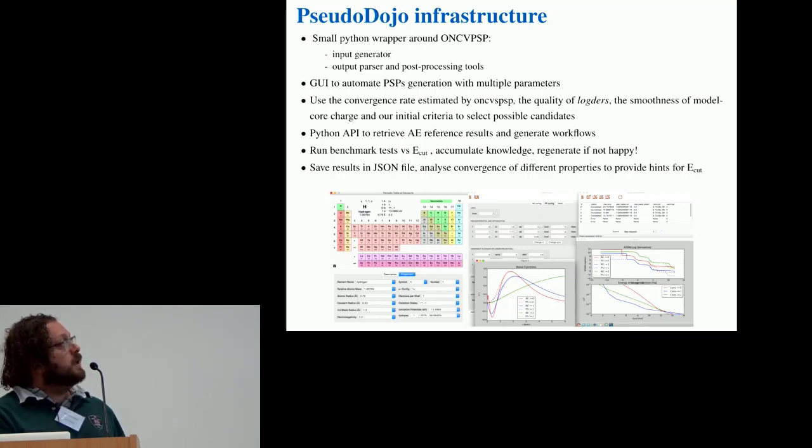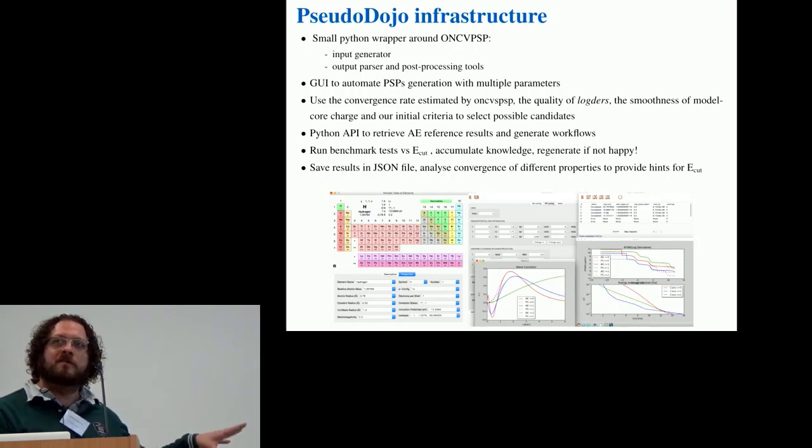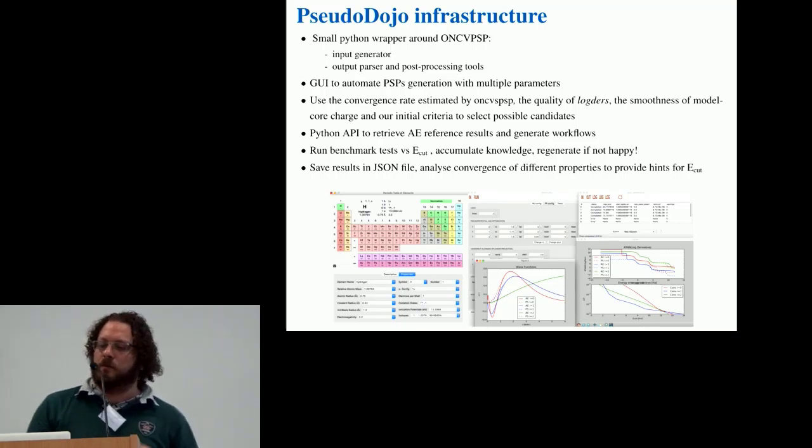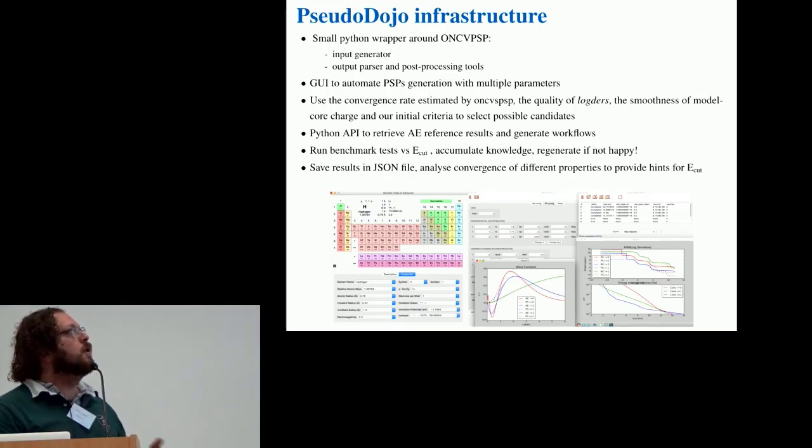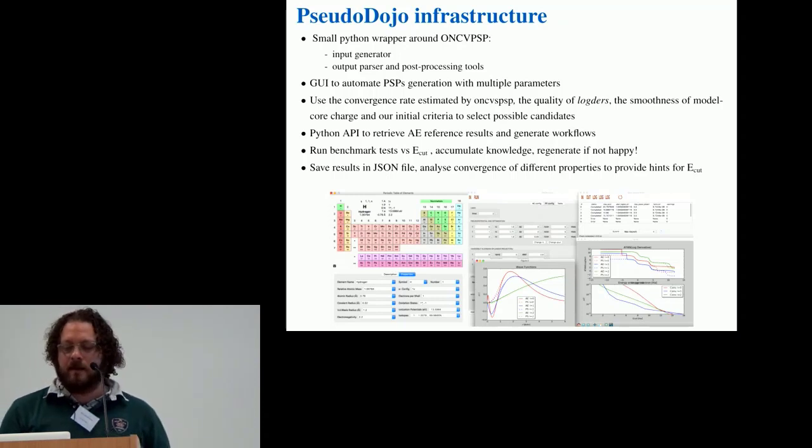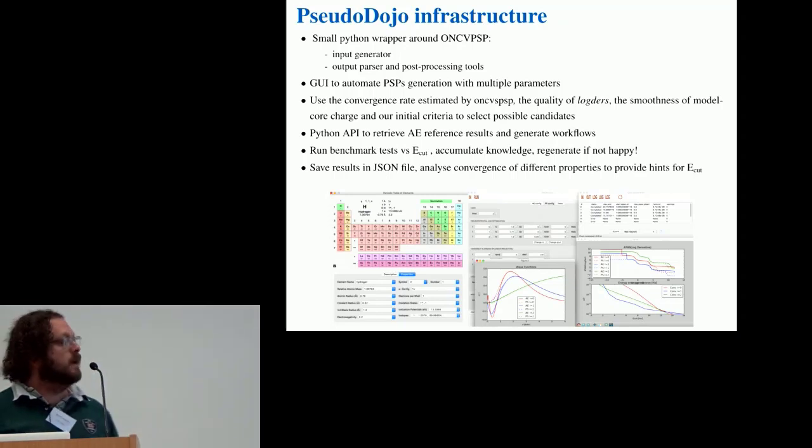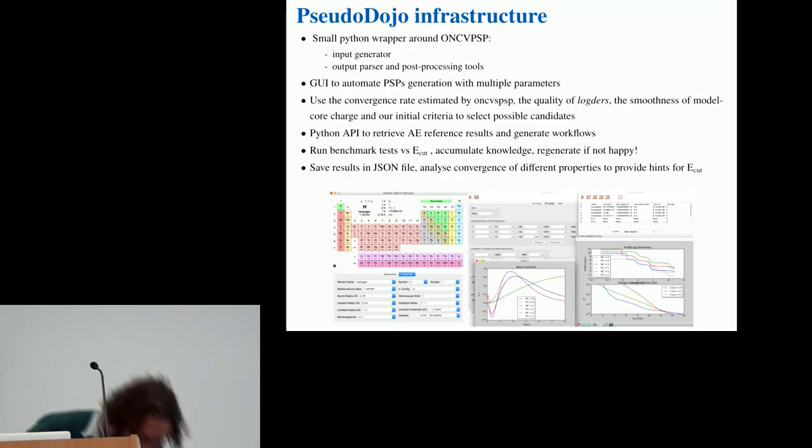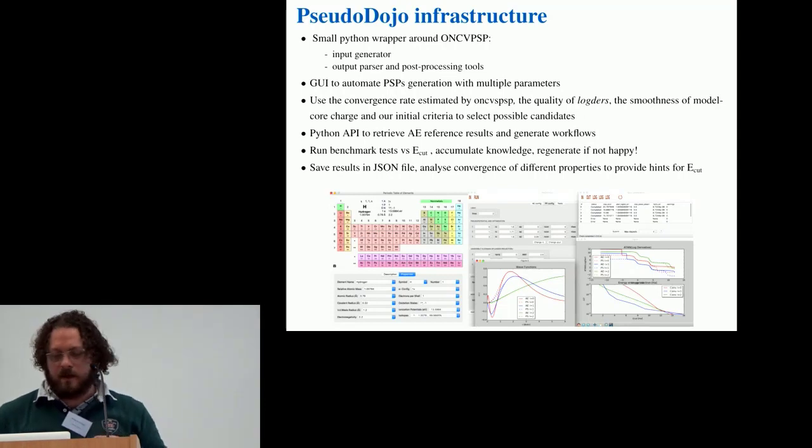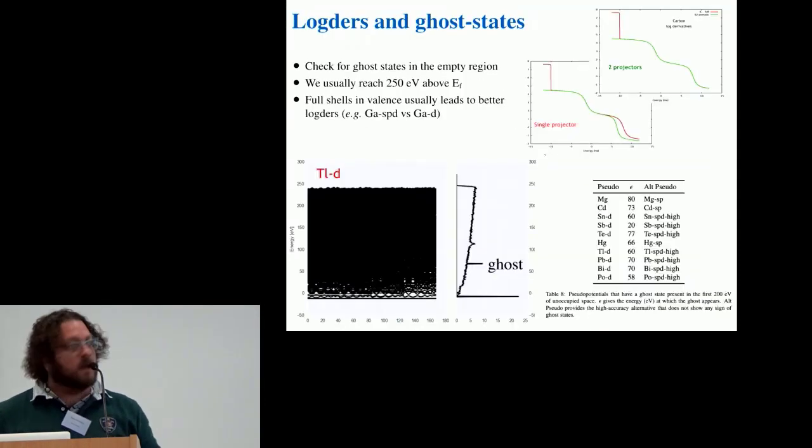Then we developed some Python machinery to generate workflows automatically and some interface to the reference results presented in the papers for the delta test and the GBRV. And these allow us to generate possible pseudos, run tests, accumulate knowledge, screen, filter, and select the most potential potentials with the properties we were seeking for.